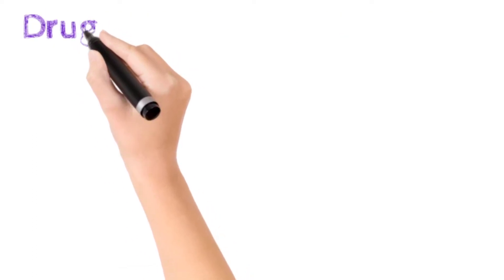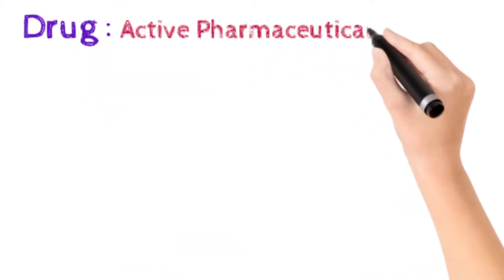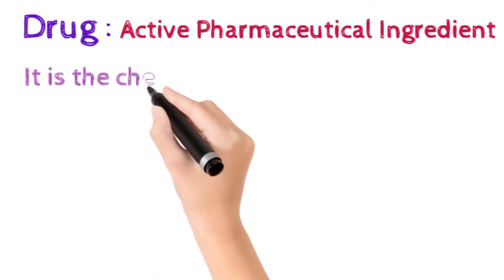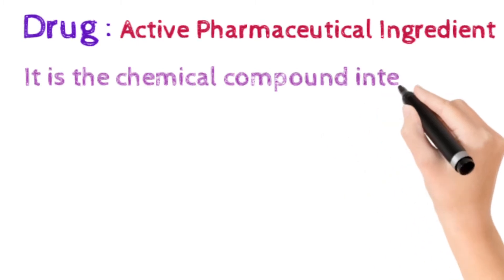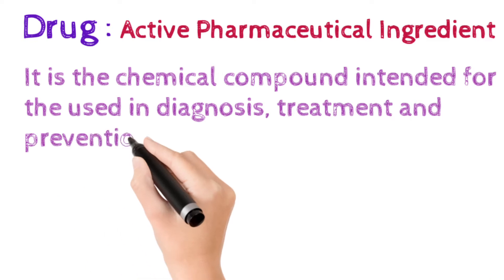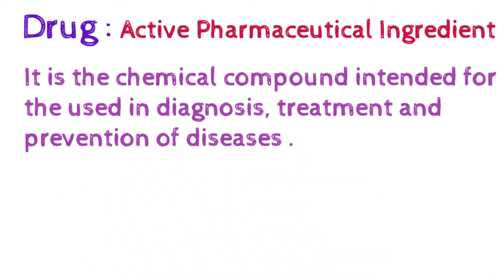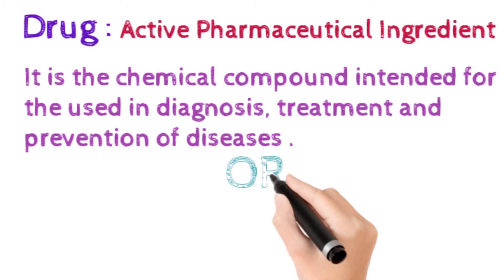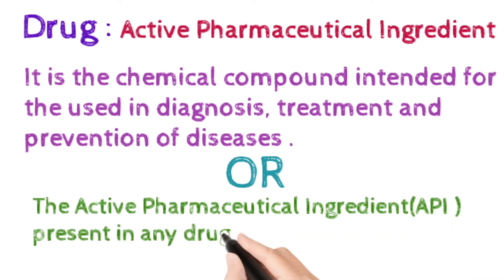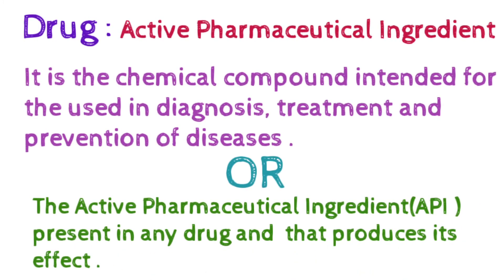Next, what is the definition of the drug? It is the active pharmaceutical ingredient. It is the chemical compound intended for the use for diagnosis, treatment and prevention of diseases. In case of diagnosis, it is used for diagnosing any diseases, treatment of any diseases, and prevention of diseases. Example are vaccines. Another definition is the active pharmaceutical ingredient present in any drug that possesses its effect. API is most important for showing their therapeutic activity.